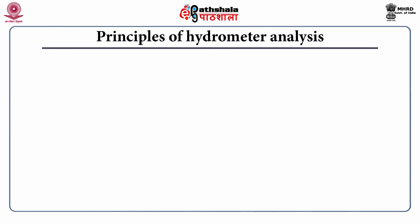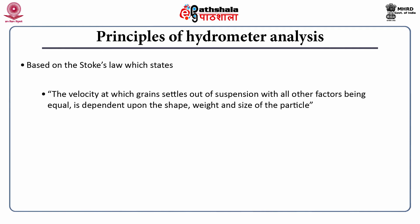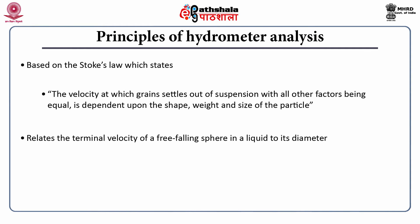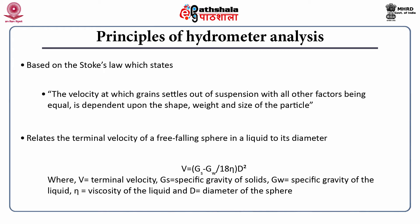Coming to the principles of hydrometer analysis, it is based on Stokes' law, which states that the velocity at which a grain settles out of suspension — with all other factors being equal — is dependent upon the shape, weight, and size of the particle. It relates the terminal velocity of a free-falling sphere in a liquid to its diameter. The equation is: V = (Gs - Gw) / (A × T × ν) × D², where Gs is specific gravity of solids, Gw is specific gravity of liquid, ν is viscosity of the liquid, and D is the diameter of the sphere.